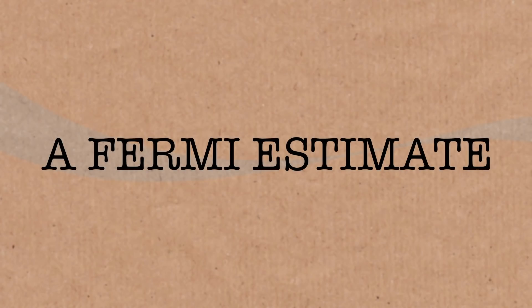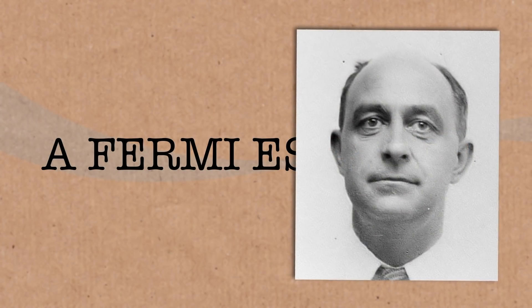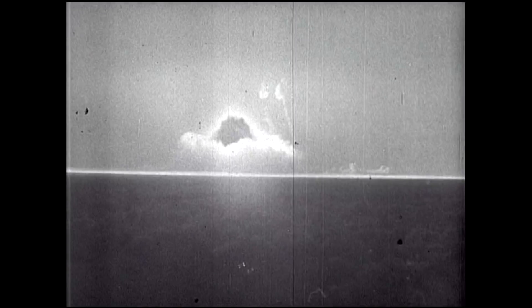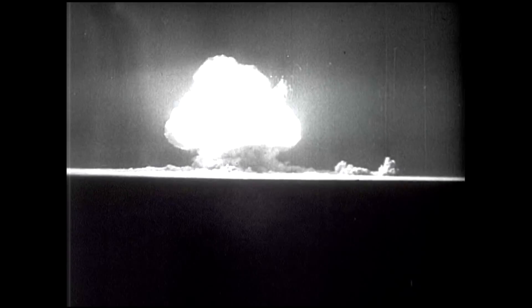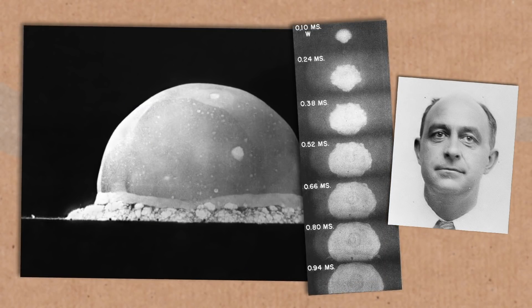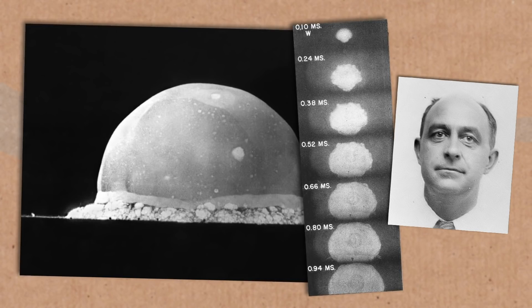This sort of estimation is called a Fermi estimate, named after physicist Enrico Fermi who did loads of these calculations. His most famous was probably when he calculated the energy released by an atom bomb detonated at the Trinity nuclear test. He did this by dropping a piece of paper during the blast and calculating how far it moved, then used physics to estimate about 10 kilotons of TNT equivalent energy. Later calculations showed it was around 21 kilotons — well within an order of magnitude.